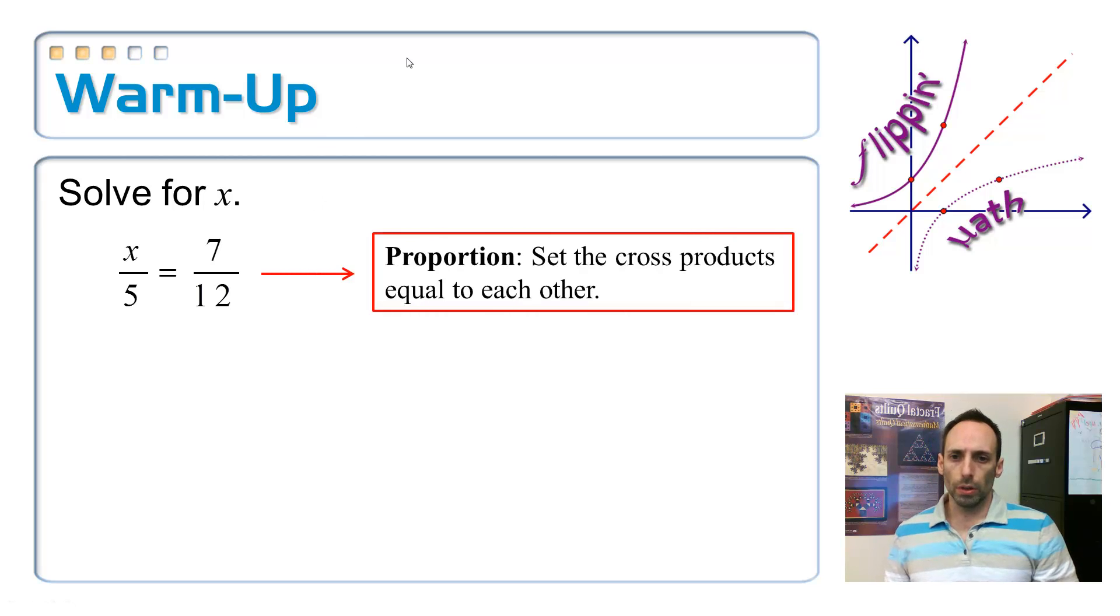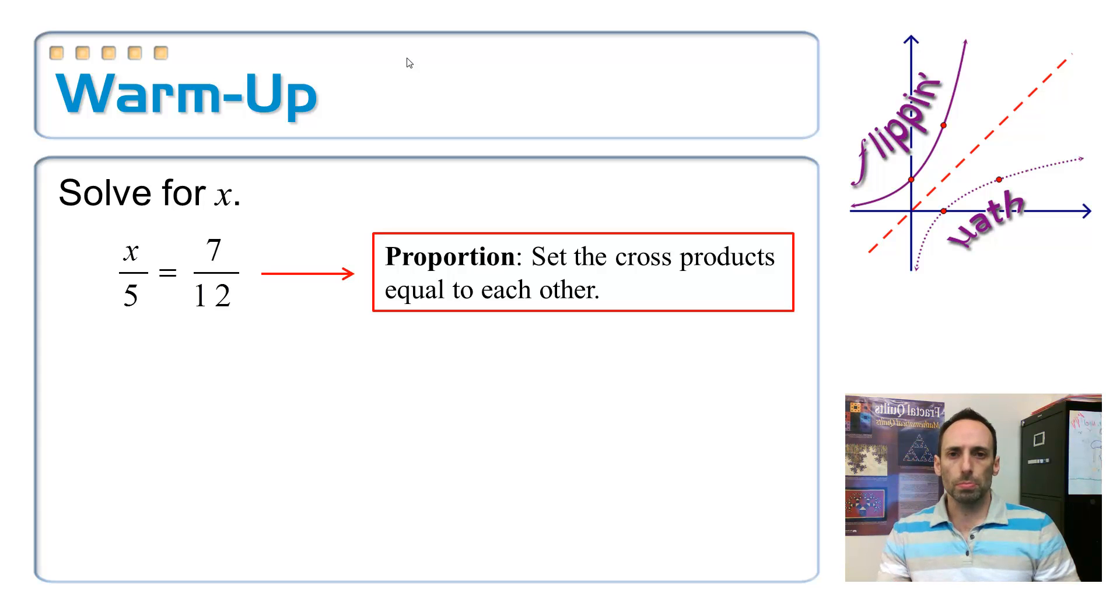Well, you just, it's a proportion, you just set the cross products equal to each other. Right? Of course you learned it as you cross multiply and divide, but don't think of it like that. It's a little bit too limiting. You want to set your cross products equal to each other. So here I have 12x is equal to 5 times 7, 35.